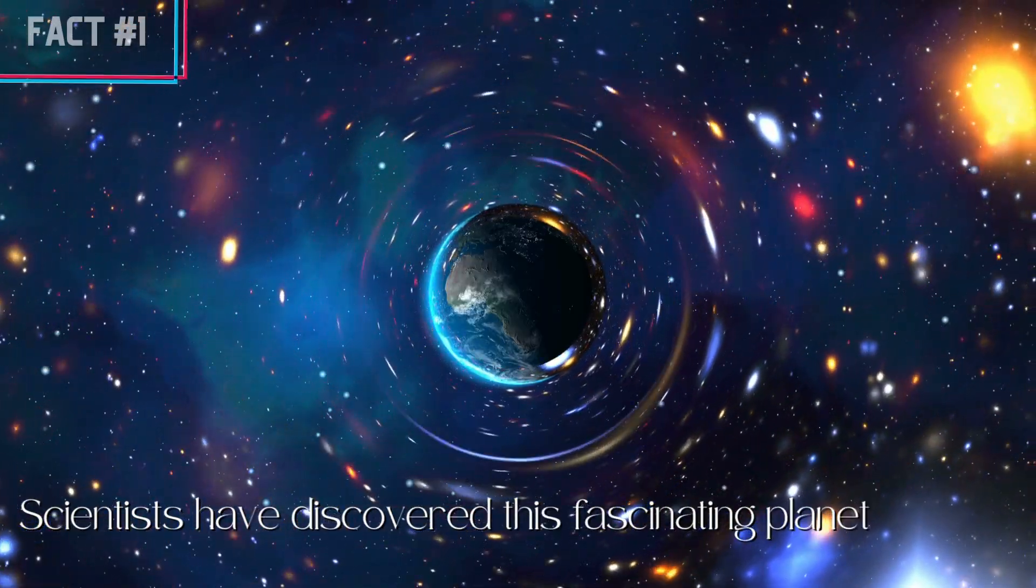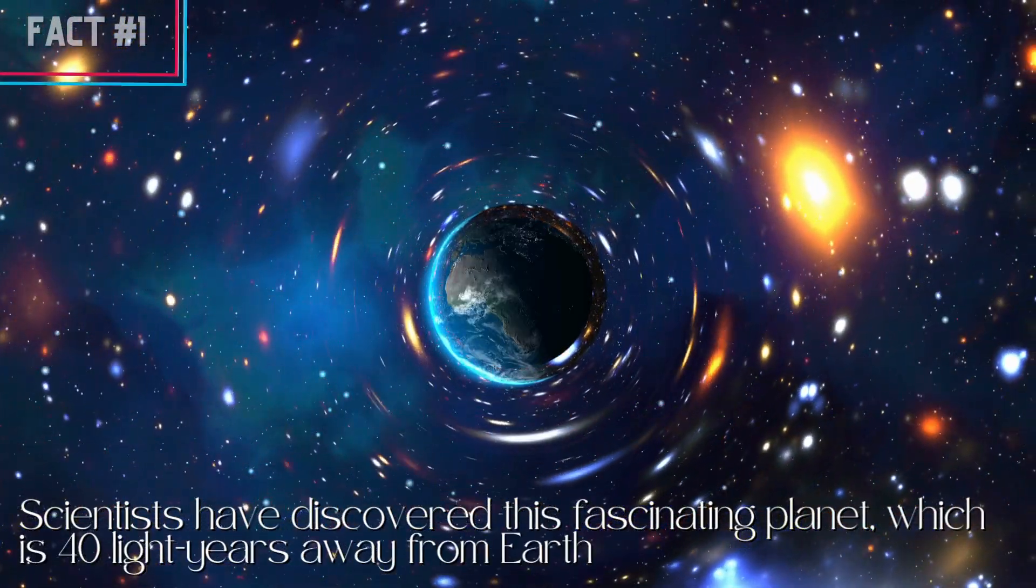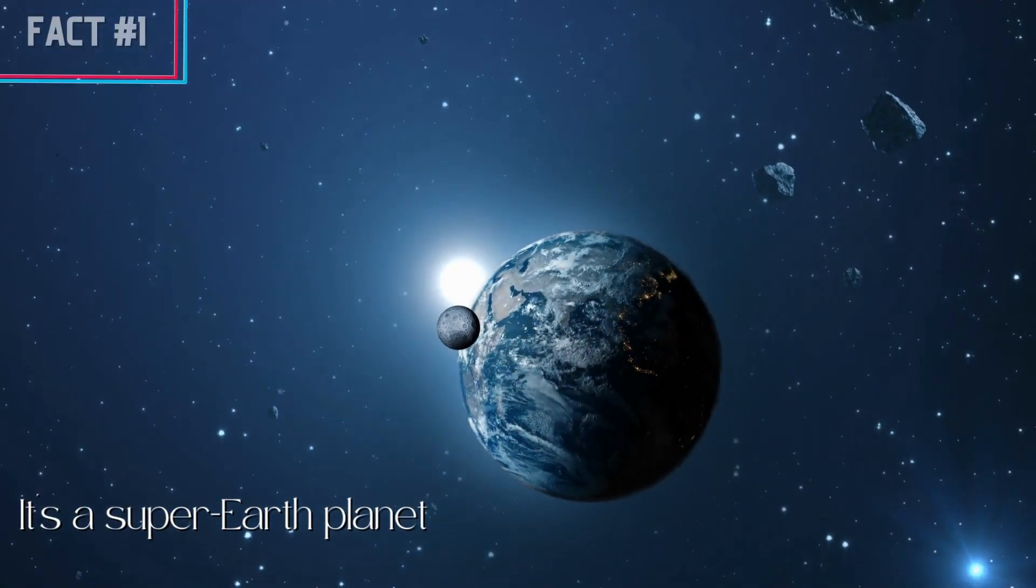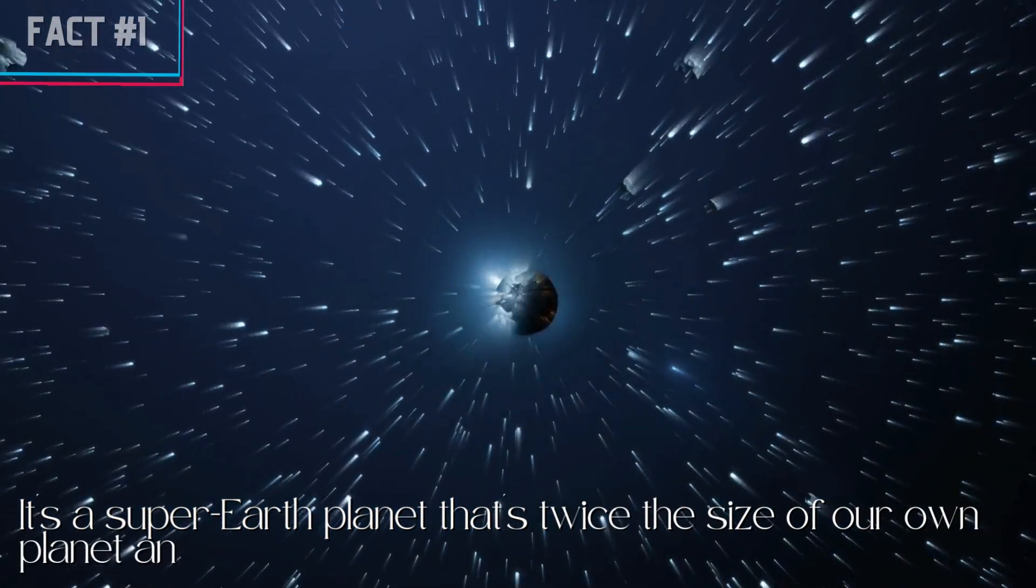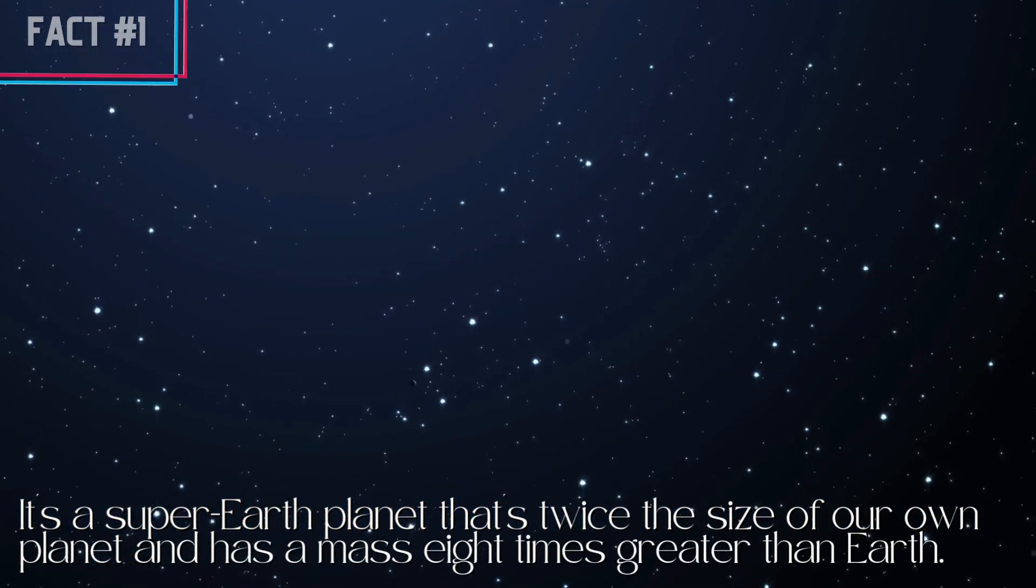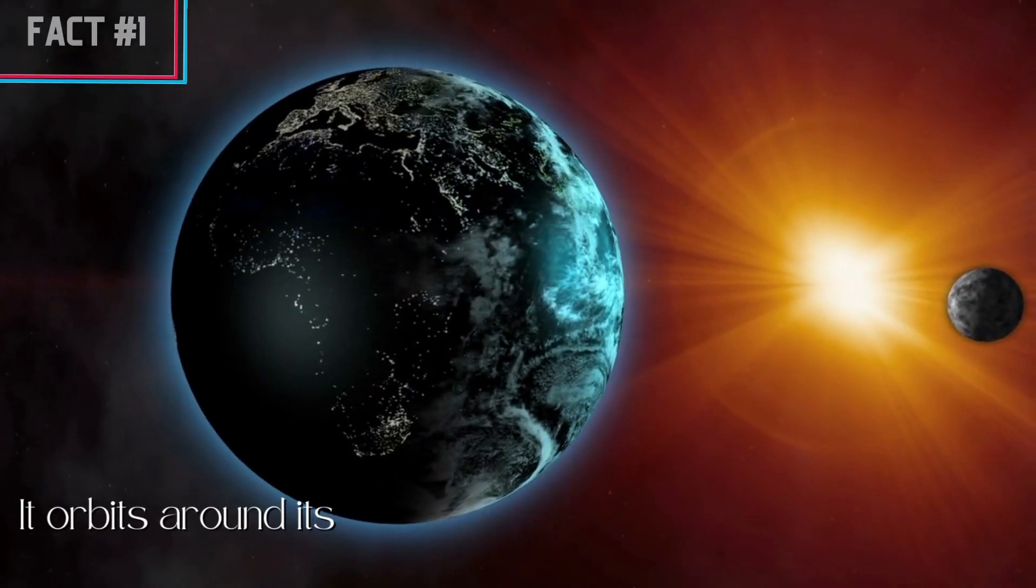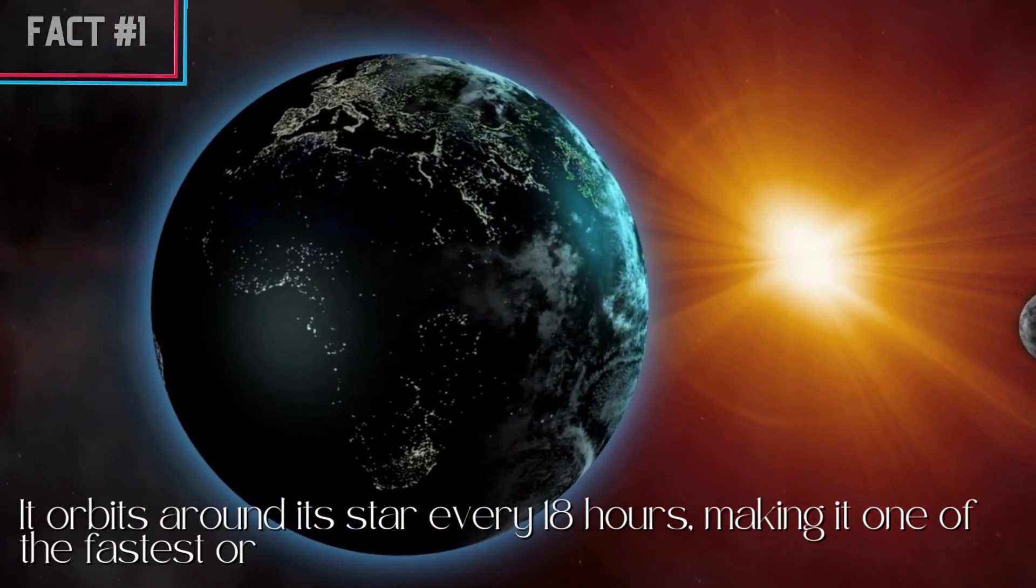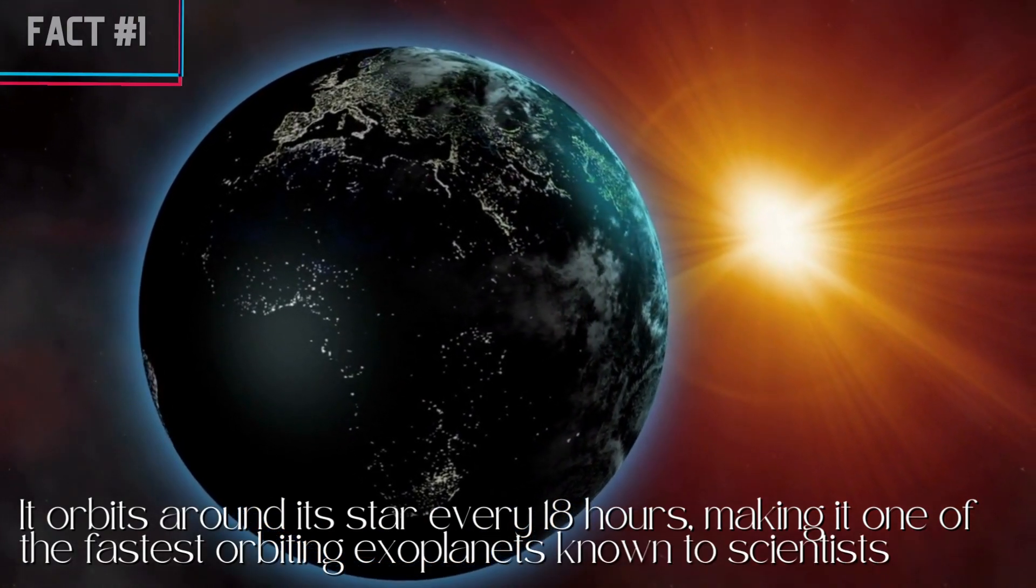Scientists have discovered this fascinating planet, which is 40 light-years away from Earth. It's a super-Earth planet that's twice the size of our own planet and has a mass 8 times greater than Earth. It orbits around its star every 18 hours, making it one of the fastest orbiting exoplanets known to scientists.